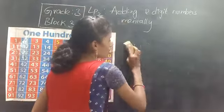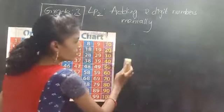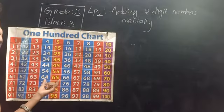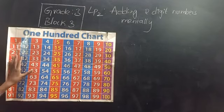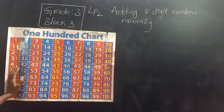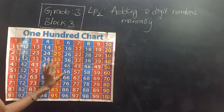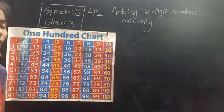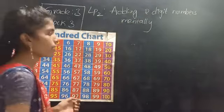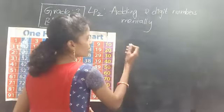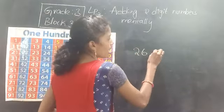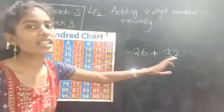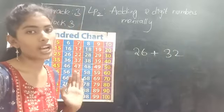What did you observe on the board children? What is there on the board? Can you observe? This is a 100 chart. Today we are going to use this 100 chart and add these 2-digit numbers mentally. How can we add? So children, first I am adding 26 plus 32.